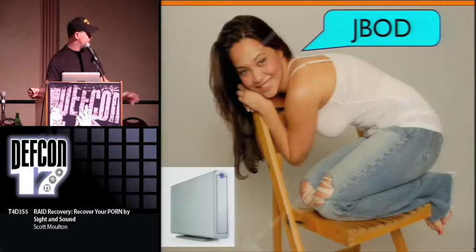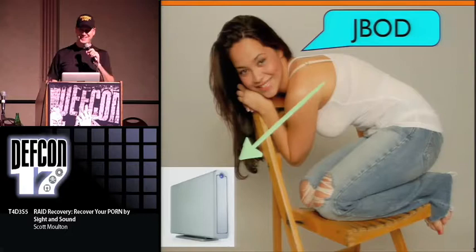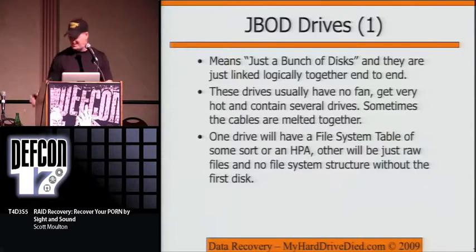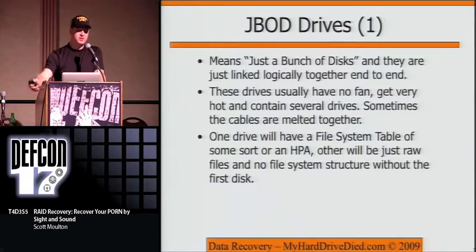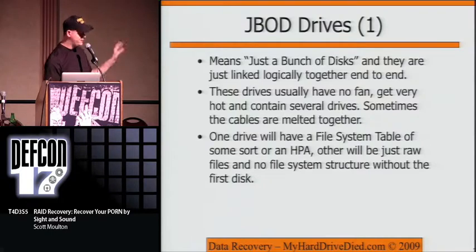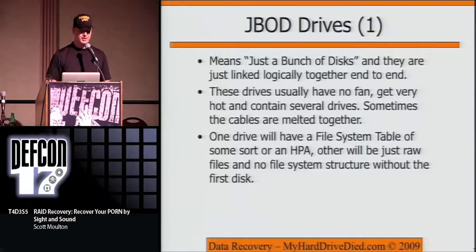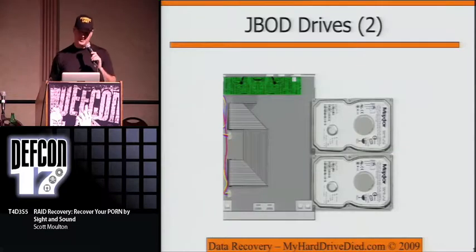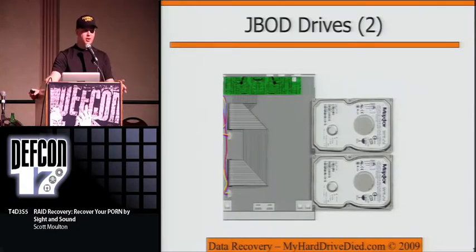So let's talk about JBOD — Just a Bunch of Disks. You basically have a bunch of disks stuck together, usually a pair. They typically have no fan, which is usually why it's broken — it overheated and something melted down. You'll have two discs. Typically one drive will have a file system on it, and the second disc will just be concatenated. There will be a board that helps concatenate it when you get to the end of the first disc. If one drive is dead and you cannot repair it, you will lose data — there's nothing you can do about it.